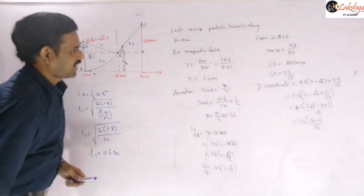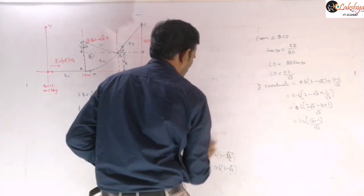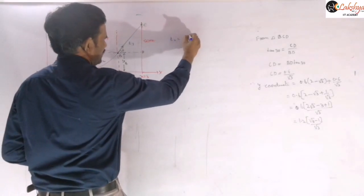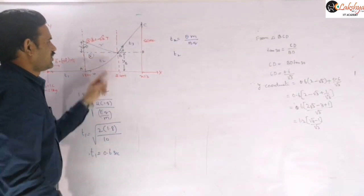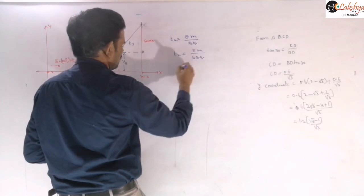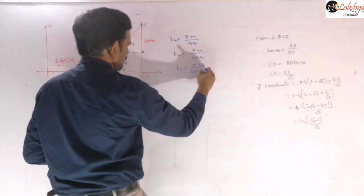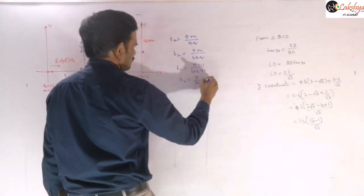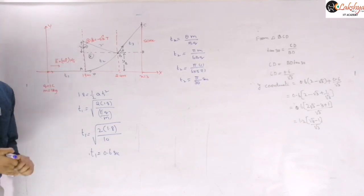For t₂ in the magnetic field, we consider the angular displacement: t₂ = θ × m / (Bq) = (π/6) × m / (Bq) = π/(6 × 5 × 1) = π/30 seconds.